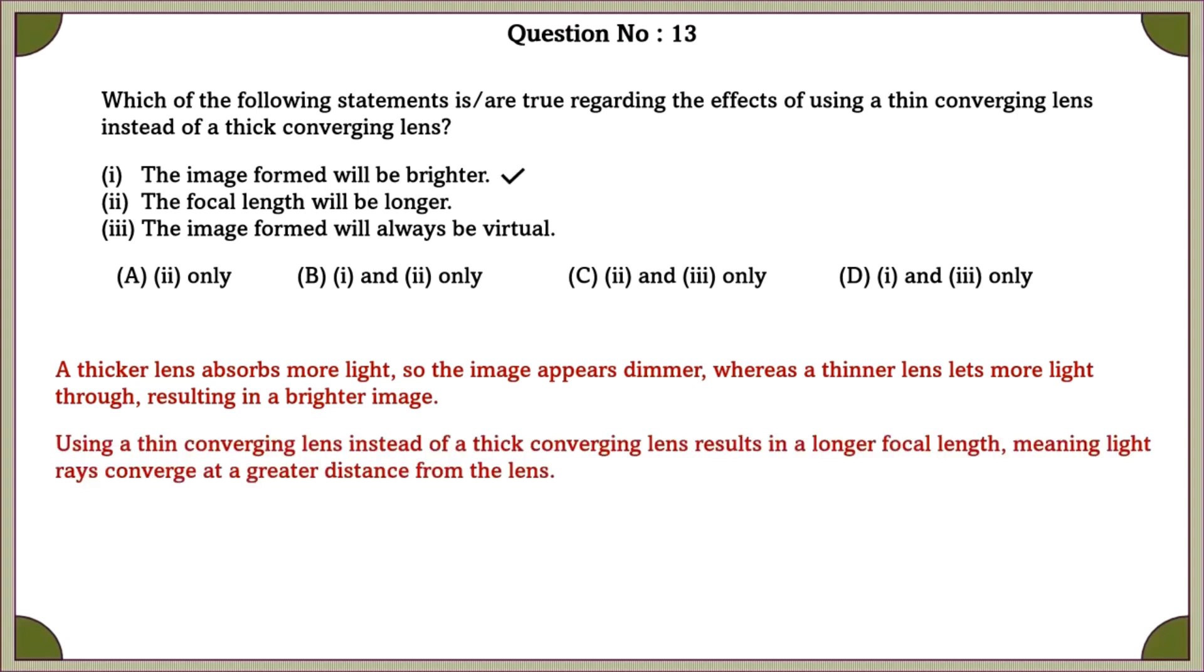Second one, the focal length will be longer. Using a thin converging lens instead of a thick converging lens results in a longer focal length, meaning light rays converge at a greater distance from the lens. Third one, the image formed will always be virtual. A convex lens forms a real and inverted image. So, the third option is wrong.